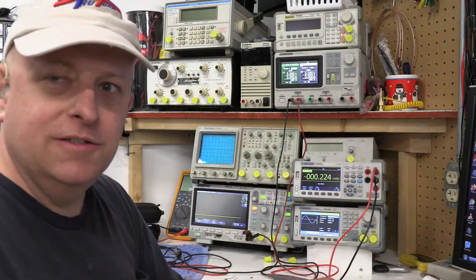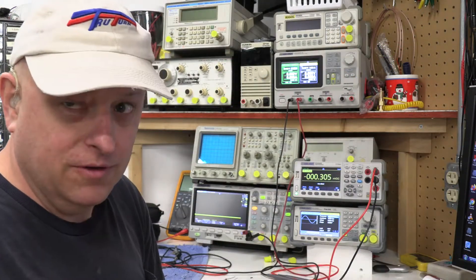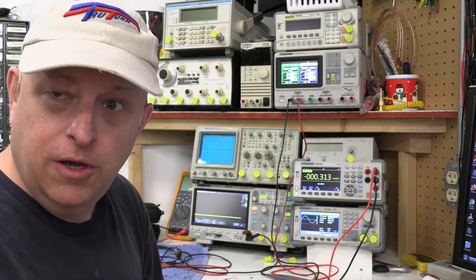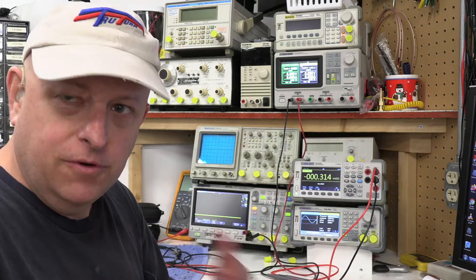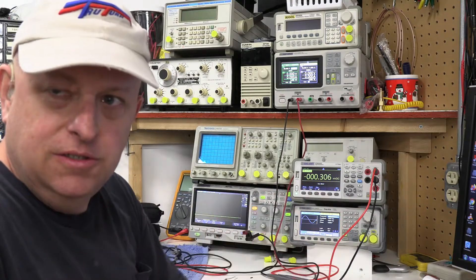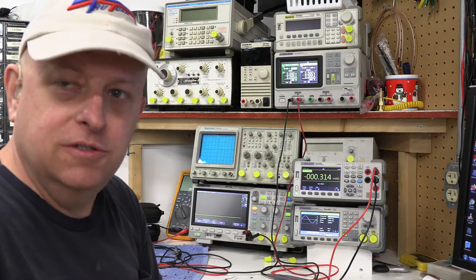And then let's take a look at this Siglent power supply I've got here. One of the cool things about this power supply is that when you connect it up in constant current mode, what it'll do is it'll ramp up the voltage when you turn the channel on. It'll ramp up the voltage until it achieves the set current that you specify.